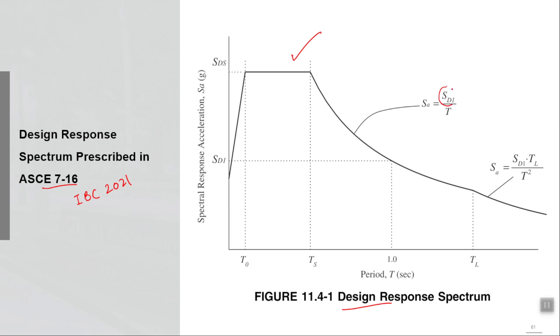You need your ST1 here, STS here, and you need the quantity called long period transition period TL, which is somewhere between 8 to 10 seconds. It is a point after which the spectrum changes its slope. Previously it is inversely proportional to T, but after this long period it is inversely proportional to T squared.